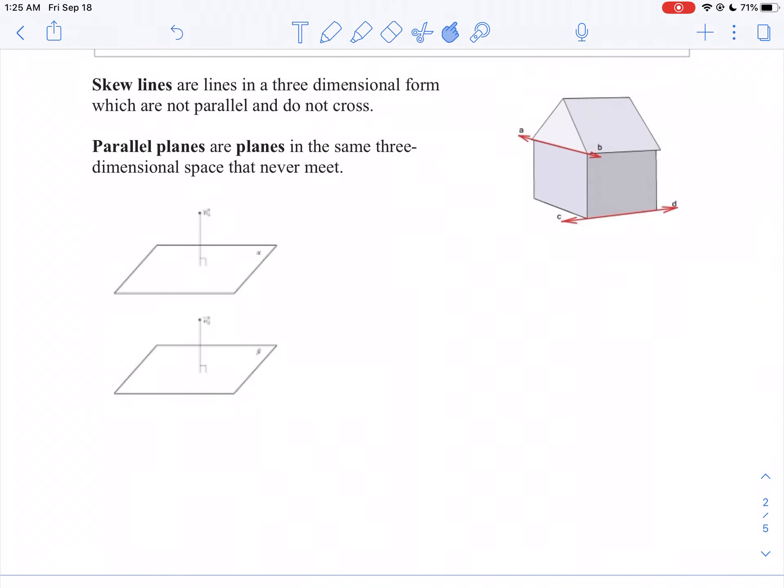you can have two planes that are parallel if they're always the same distance apart and never meet. You can't have skew planes because planes by definition are not the same plane. But planes can be parallel.